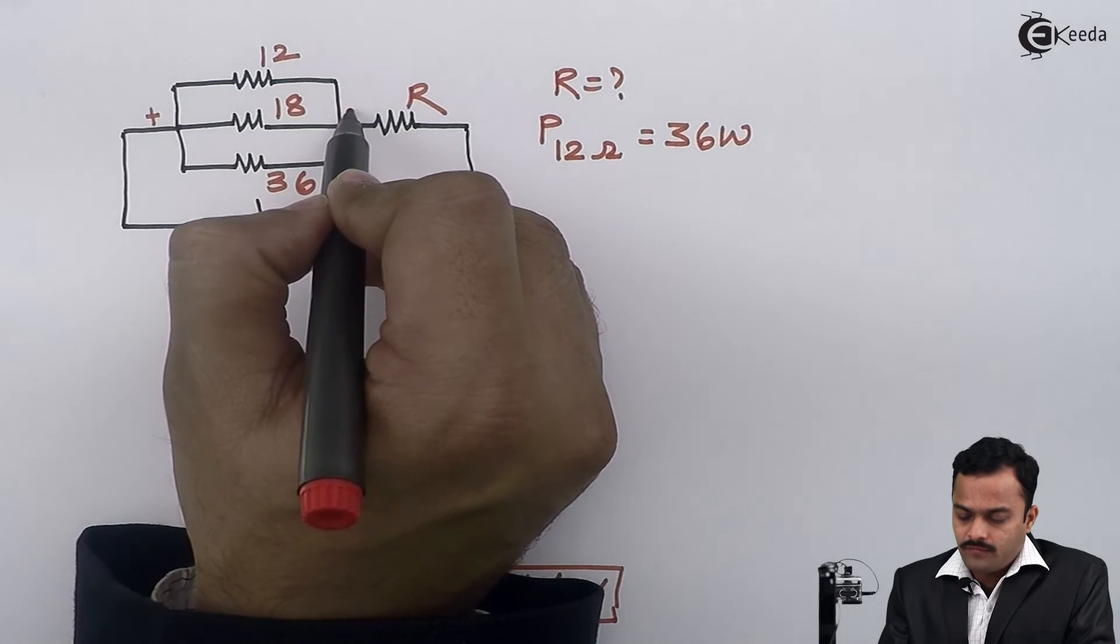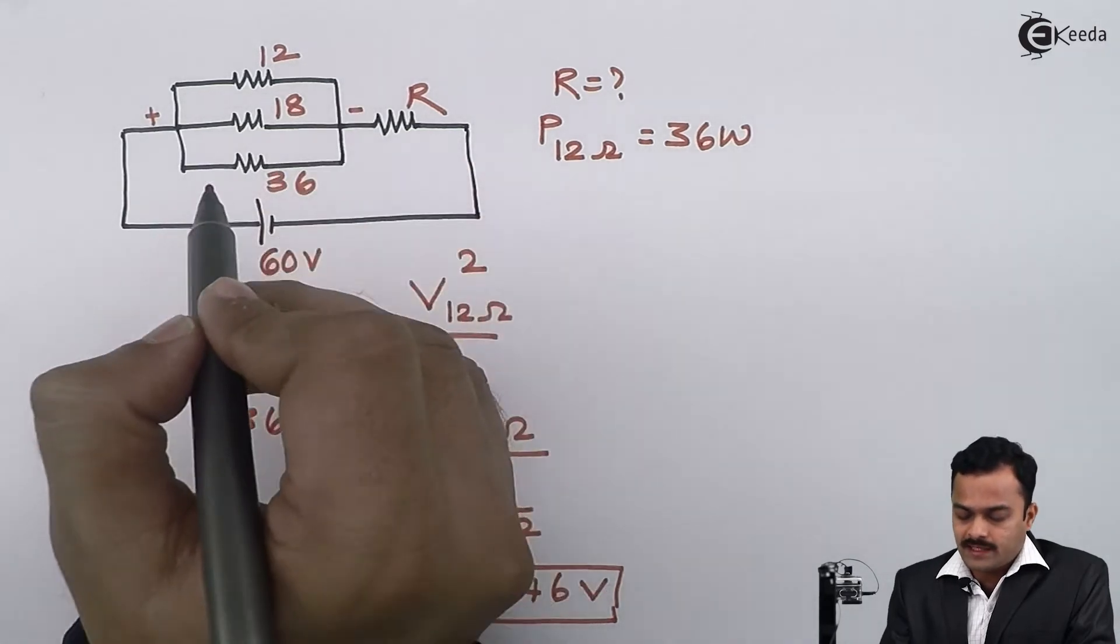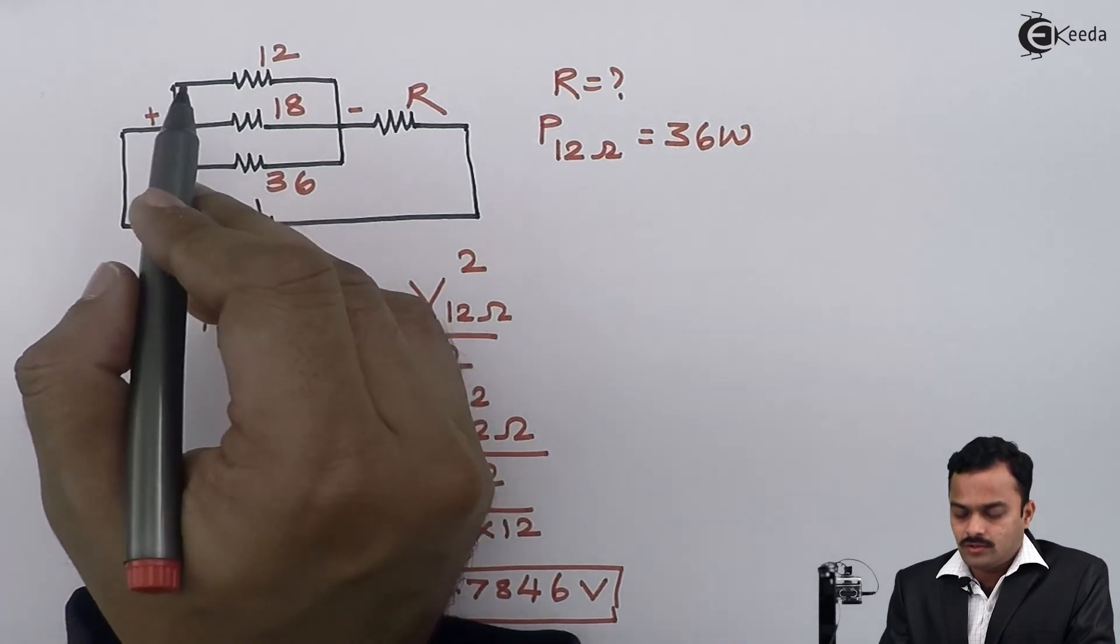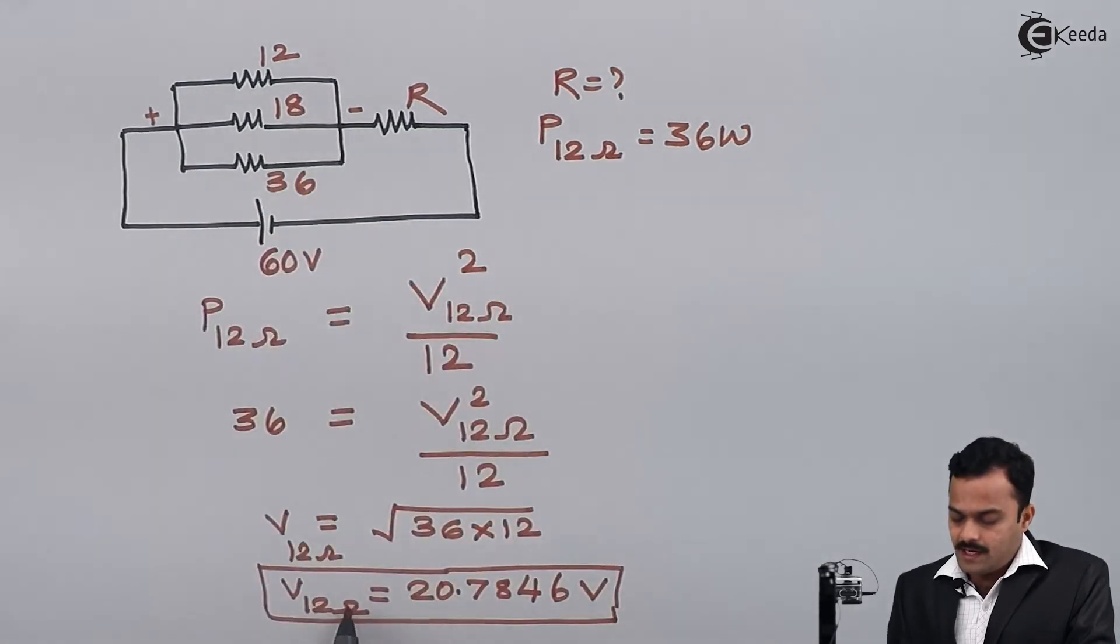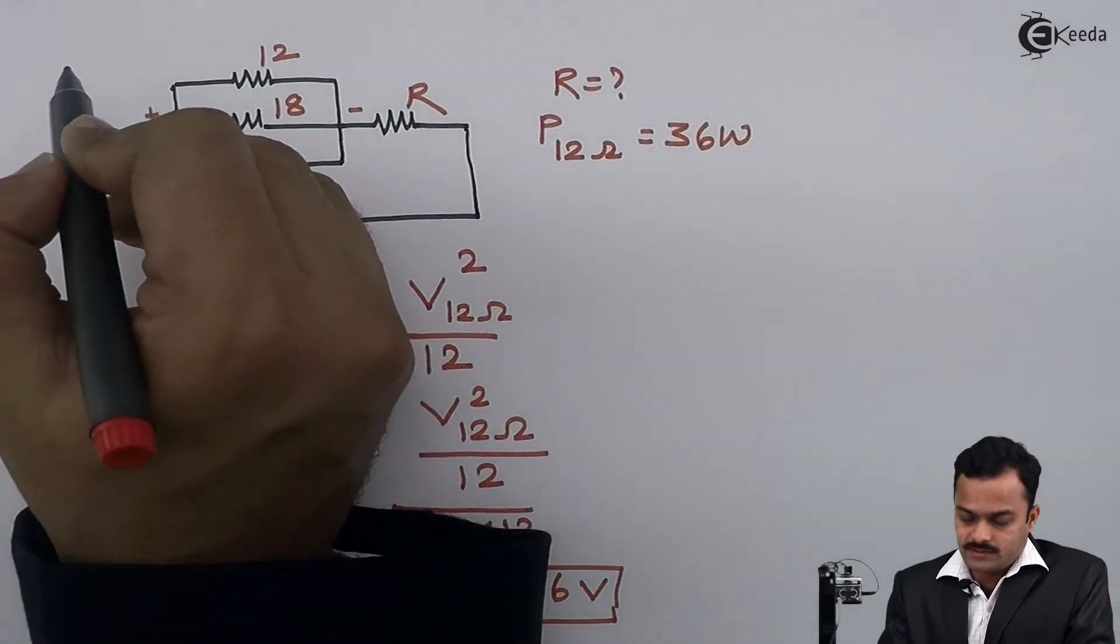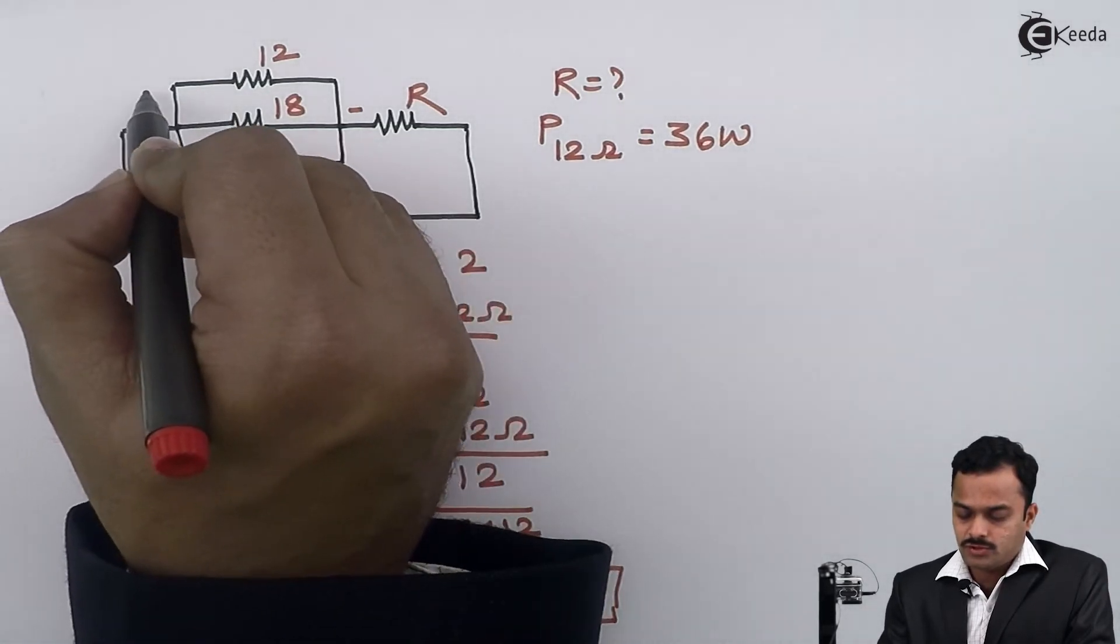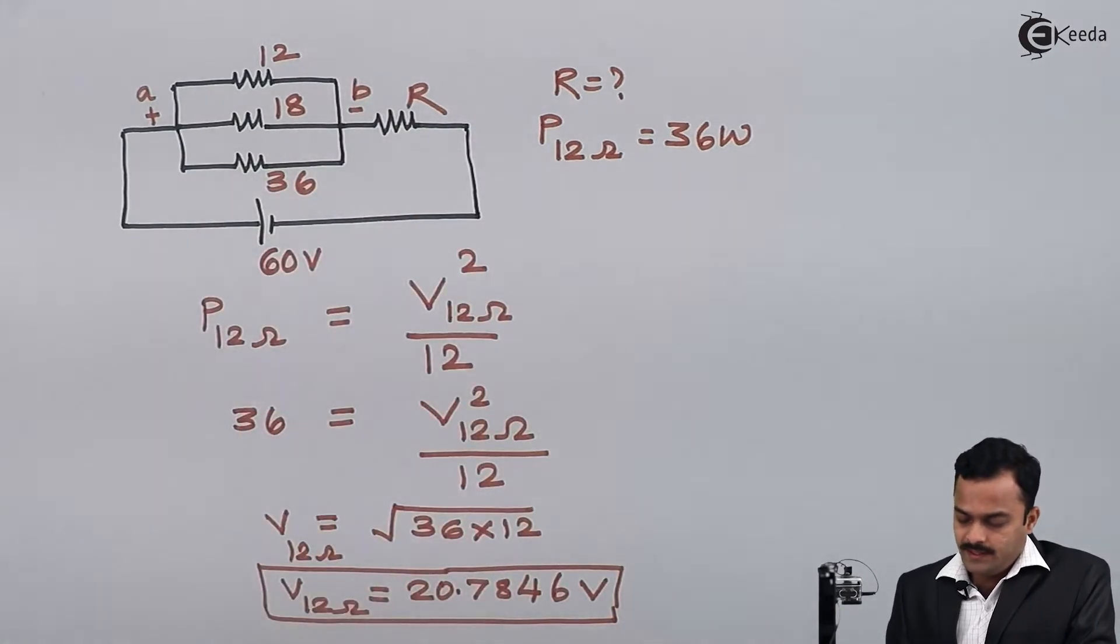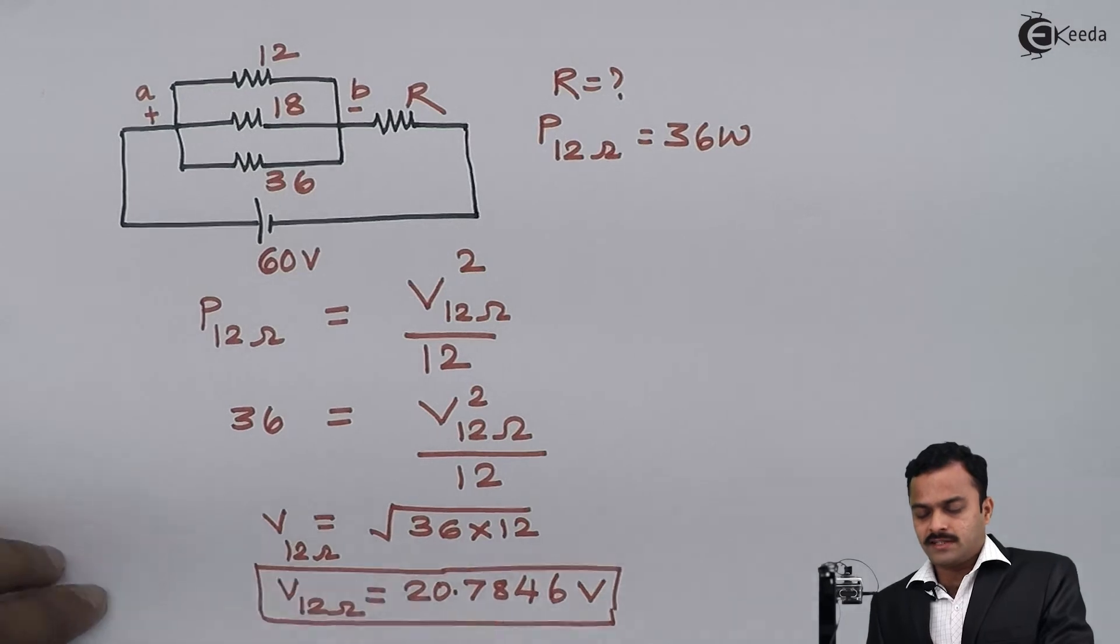I'll consider the polarity plus-minus depending on the direction of current, so plus-minus, and the value is 20.7846. The voltage between these two points, which I'll mark as A and B, is 20.7846. Now I will redraw the circuit.